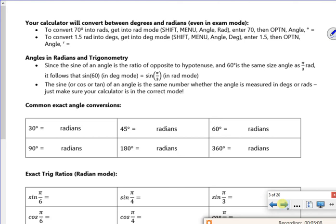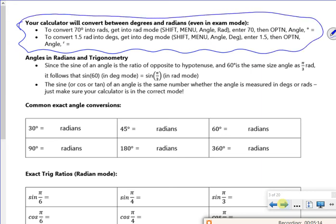So your calc will do it, but it's pointless because when you're in exam mode, you can't use it on your calc. So I suppose it's been there really, to be fair. Right then, so it says angles in radians and trig. So it's just the same idea, it's just a ratio. So there's no worries there.